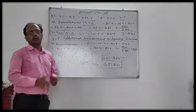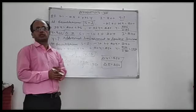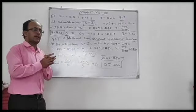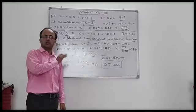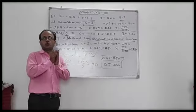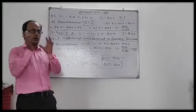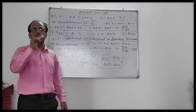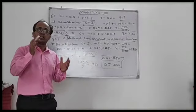Good morning students and welcome to our economics class. In the last class we solved some numerical questions linked to the consumption function and saving function. We studied consumption function C = C-bar plus bY, and saving function Y minus C-bar bracket 1 minus bY, and the equilibrium condition Y equals C plus I.